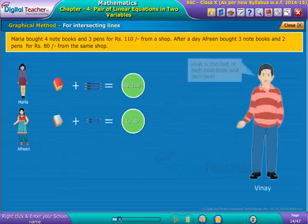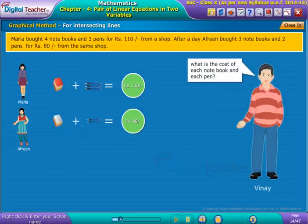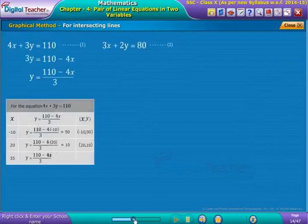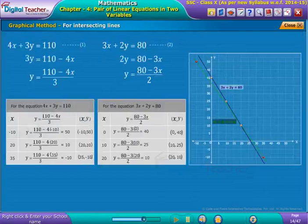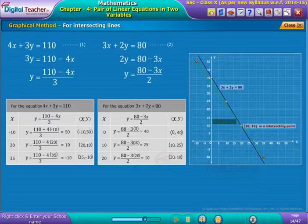Later, her friend Vinay asked what is the cost of each notebook and each pen. Solution: Let the cost of each notebook be rupees X and the cost of each pen be rupees Y. Then the equations representing the above example are used. For equation 2, get another straight line as shown on the screen. We observe that the two straight lines intersect at the point whose coordinates are (20, 10).